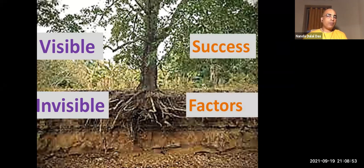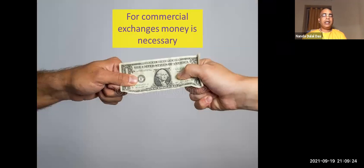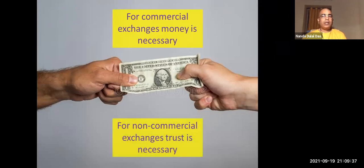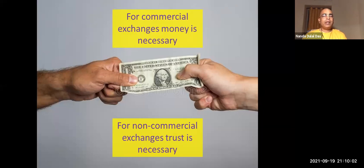What is visible is many times the success of people, but what is invisible are the different factors that contributed to that success. For any commercial exchange — a patient paying fees, a doctor paying an EMI — money is very important. But for non-commercial exchanges, whether it is traveling, education, spirituality, or even purchasing milk from our milkman, trust is very important. The milkman says this is genuinely cow milk, and we just trust him.